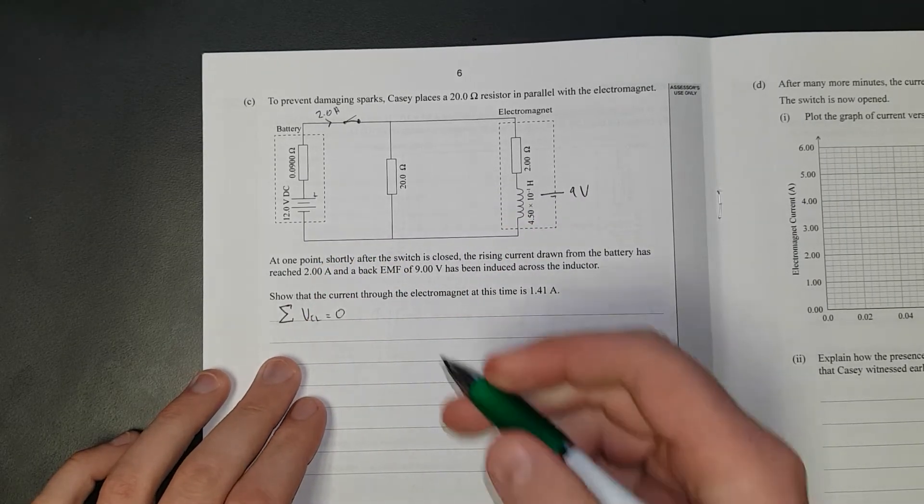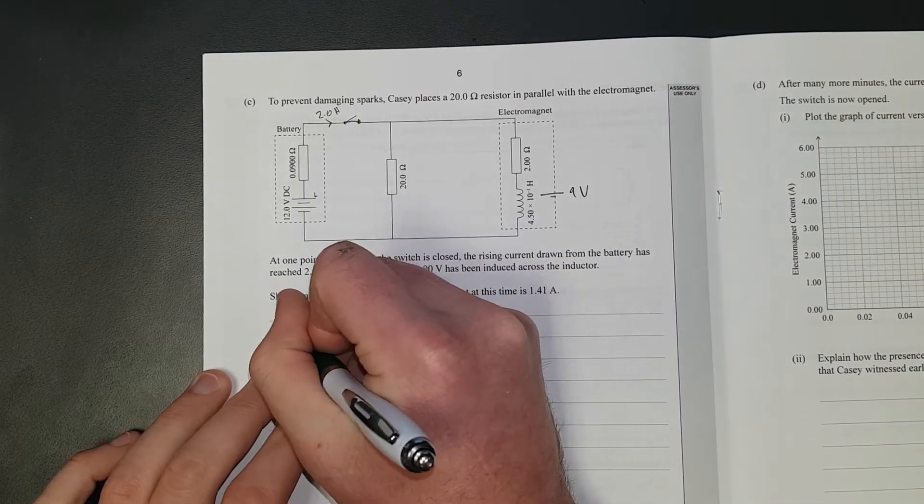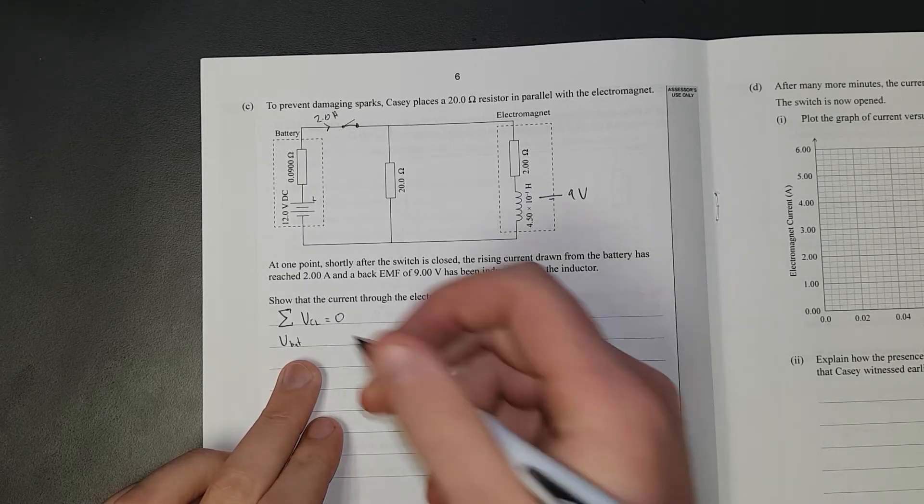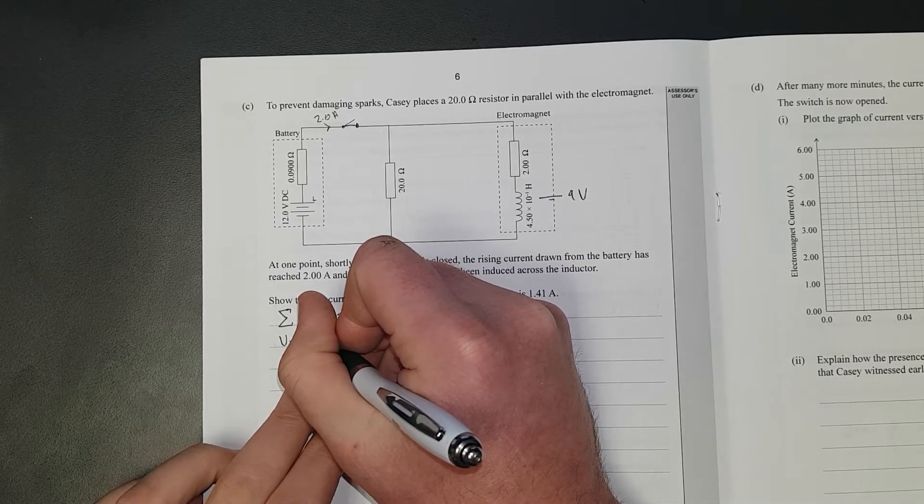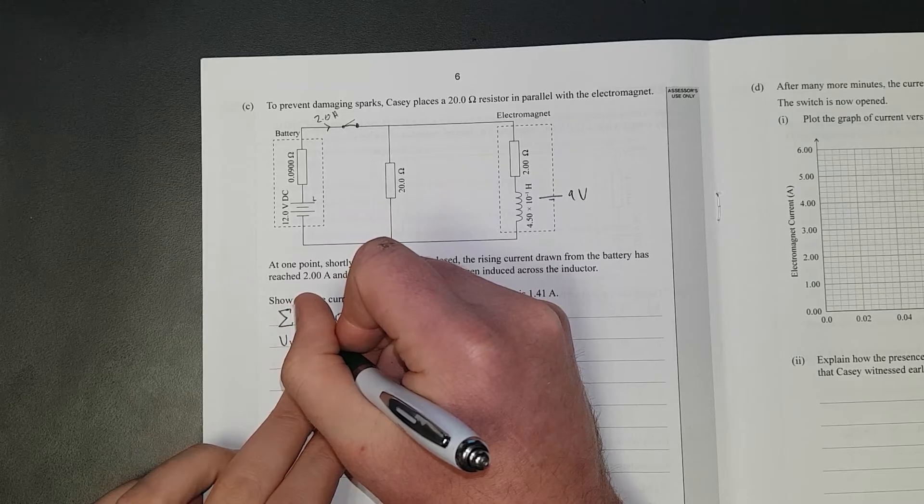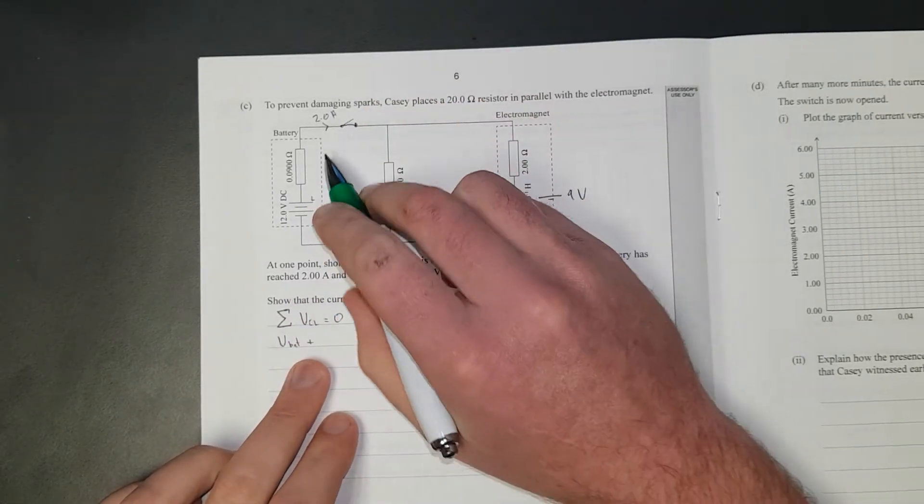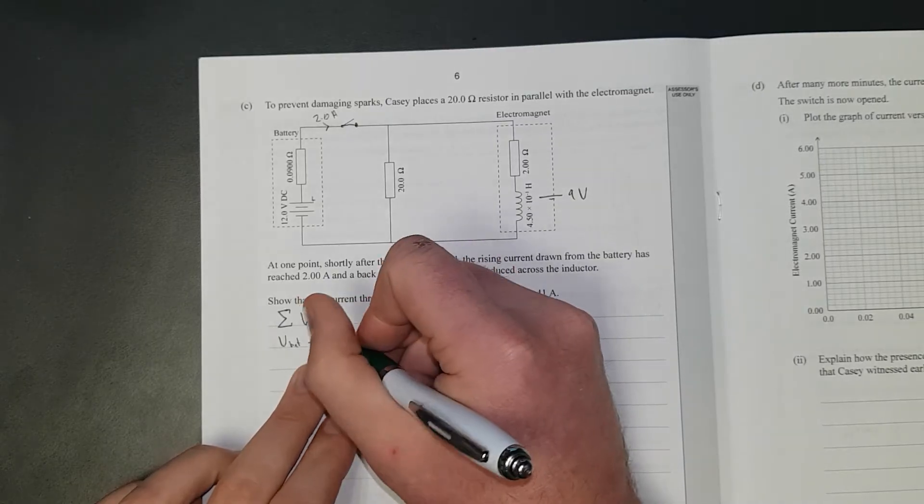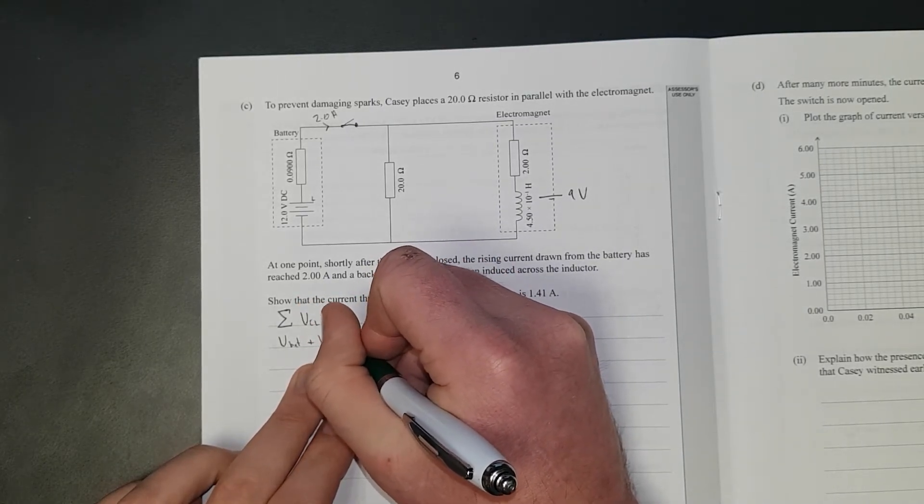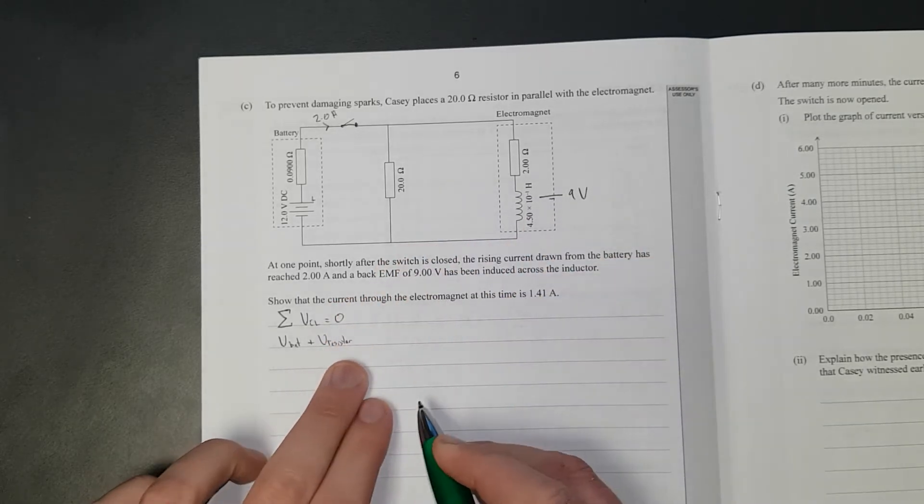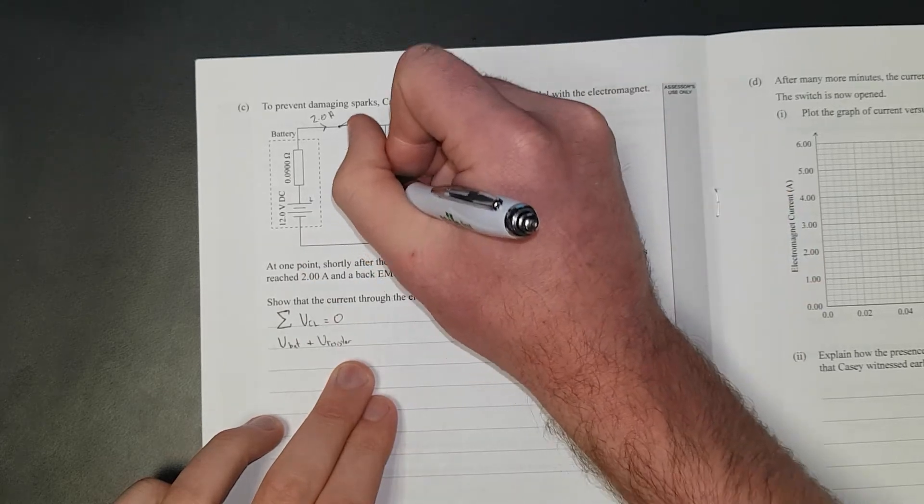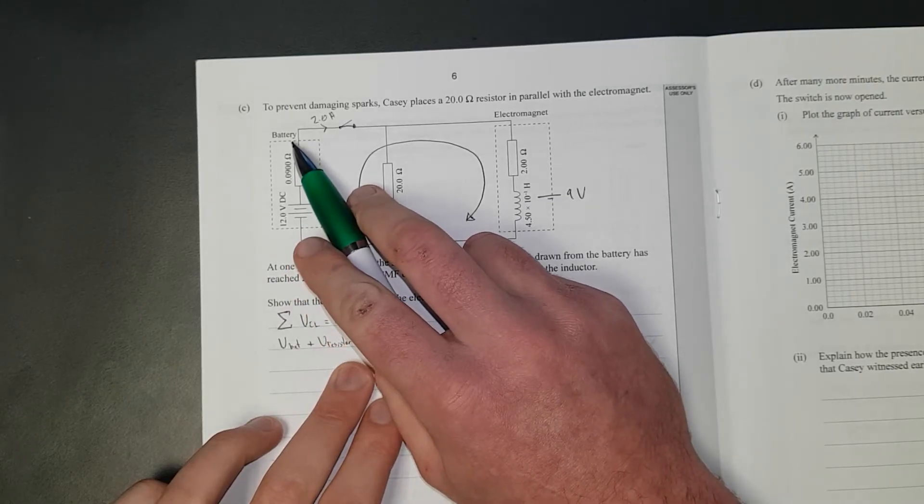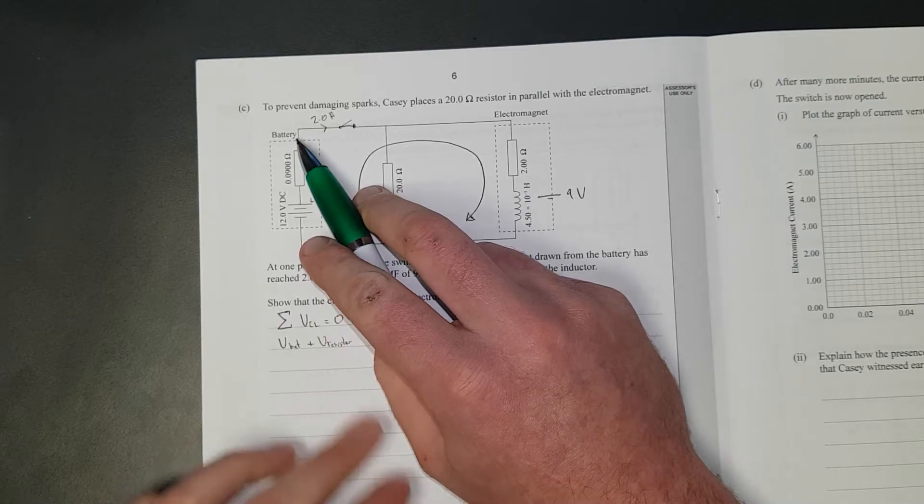In other words, I'm going to call this V battery. V bat. And then what else have we got? I'm going to go plus, because I know if I've said the current's going this way, I'm going down the potential difference of the battery. So it's going to be plus V bat, or resistance, resistor. And this is my loop.